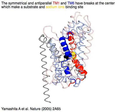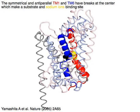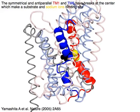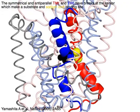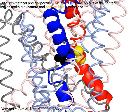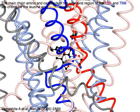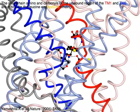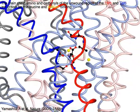The symmetrical and anti-parallel TM1 in red and TM6 in blue have breaks at the center, which create a substrate leucine and yellow sodium ion binding site. The main chain amino and carbonyls in the unwound region of TM1 and TM6 are critical for leucine and sodium binding.